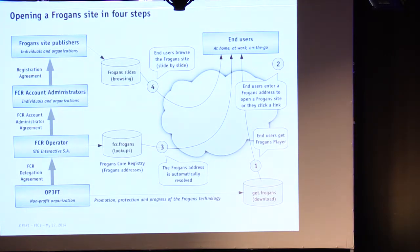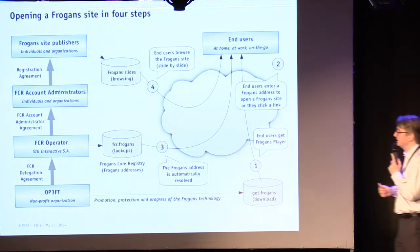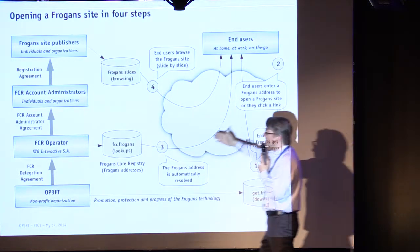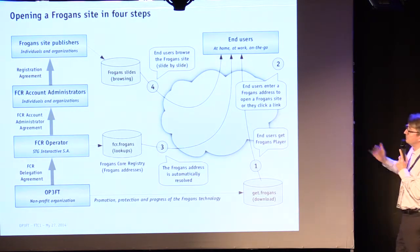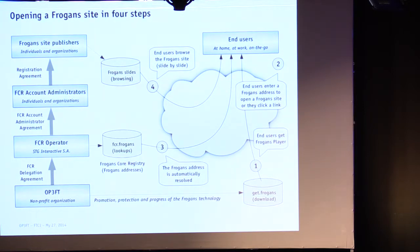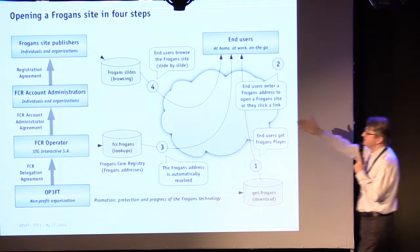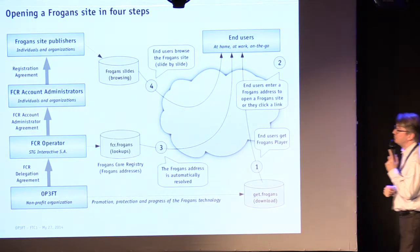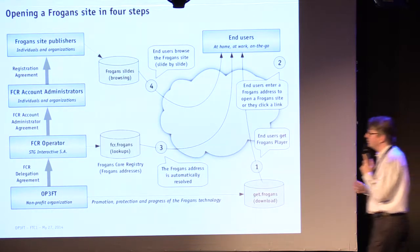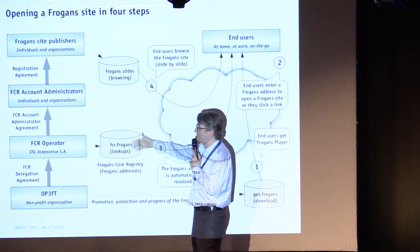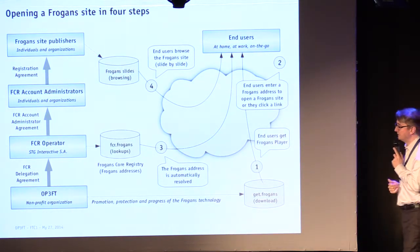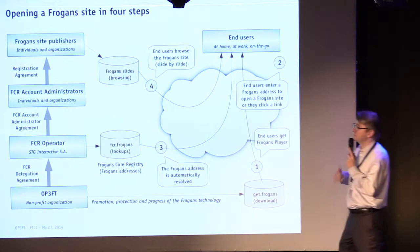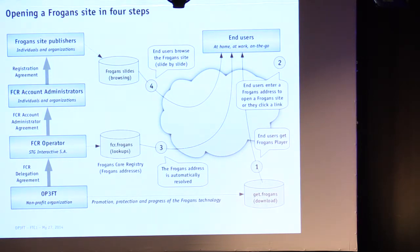In our system you may have understood that we have FROGANCE addresses and sites. The relationship between sites and addresses is simple: when you publish a FROGANCE site, you need to have an address — just like in the web universe, where you need a domain name. FROGANCE works the same way. The role of the FCR operator is to maintain this address database so that the same address is not given to two people — uniqueness is essential.